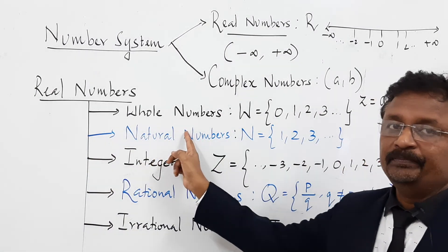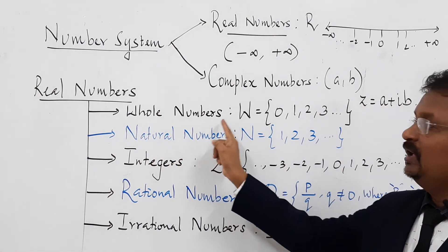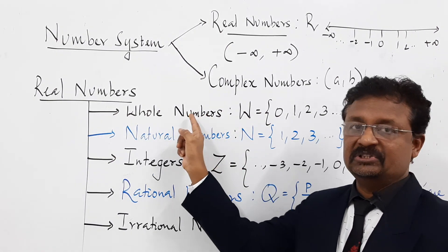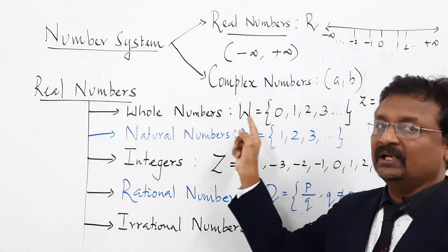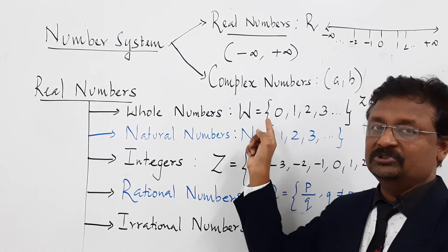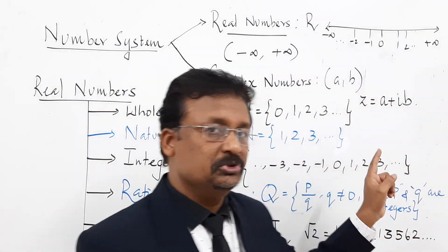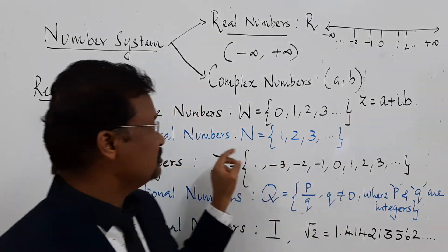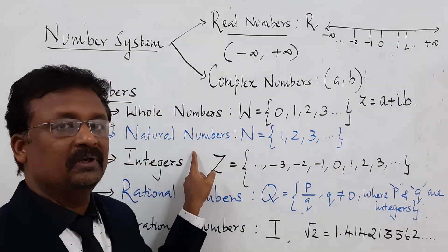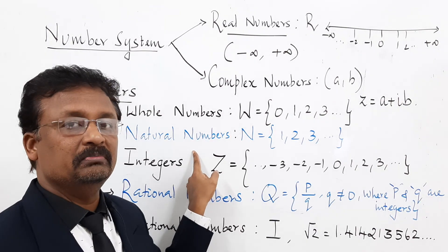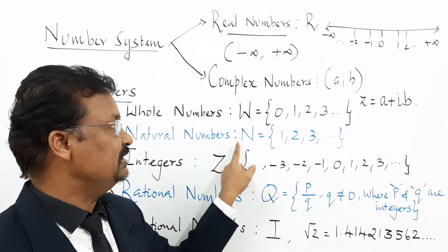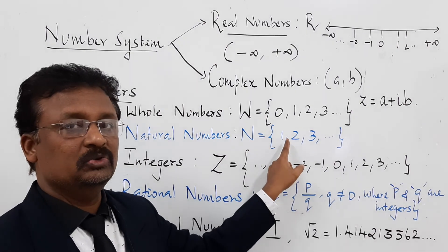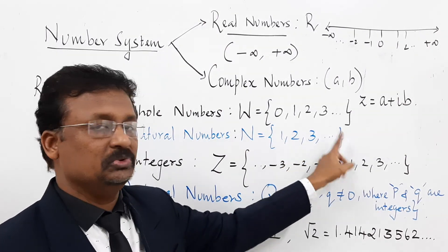First type: whole numbers. Whole numbers are represented by the letter W. W is the set of all numbers 0, 1, 2, 3, 4 and so on. The second type is natural numbers, represented by the capital letter N. Natural numbers are the set of all numbers 1, 2, 3 and so on.